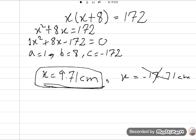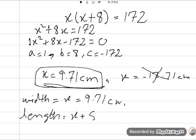So width, because width is x, what is x? 9.71 cm. Length: x plus 8. So what is x? 9.71 cm plus 8 is equal to 17.71 cm.